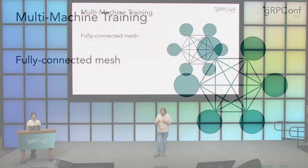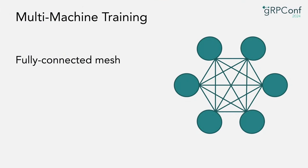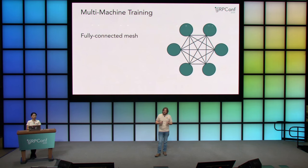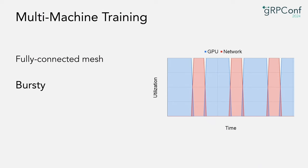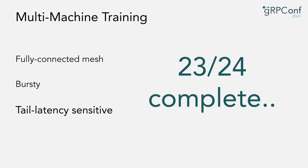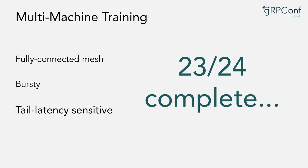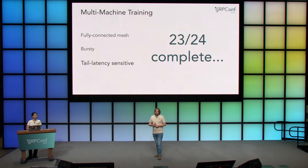You get a fully connected mesh because every node does some processing, then updates all other nodes, and receives updates from all other nodes. Every node is sending and receiving from every other node — a complete graph, which networks aren't happy about. You're also very bursty: there are periods where you saturate a GPU or TPU, then do a bunch of network traffic all at once. The system is in lockstep, so the last node delays all others. If 23 out of 24 nodes complete a step, all nodes wait for that last one, leaving GPUs sitting idle. Tail latency sensitivity is critical — you want them all to complete around the same time.